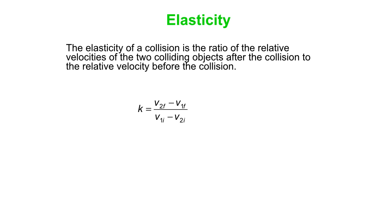Note that it's v2f minus v1f, those are the final velocities of objects 2 and 1. In the denominator we reverse them, so it's v1i, the initial velocity of object 1, minus the initial velocity of object 2. We reverse the order to keep k positive.